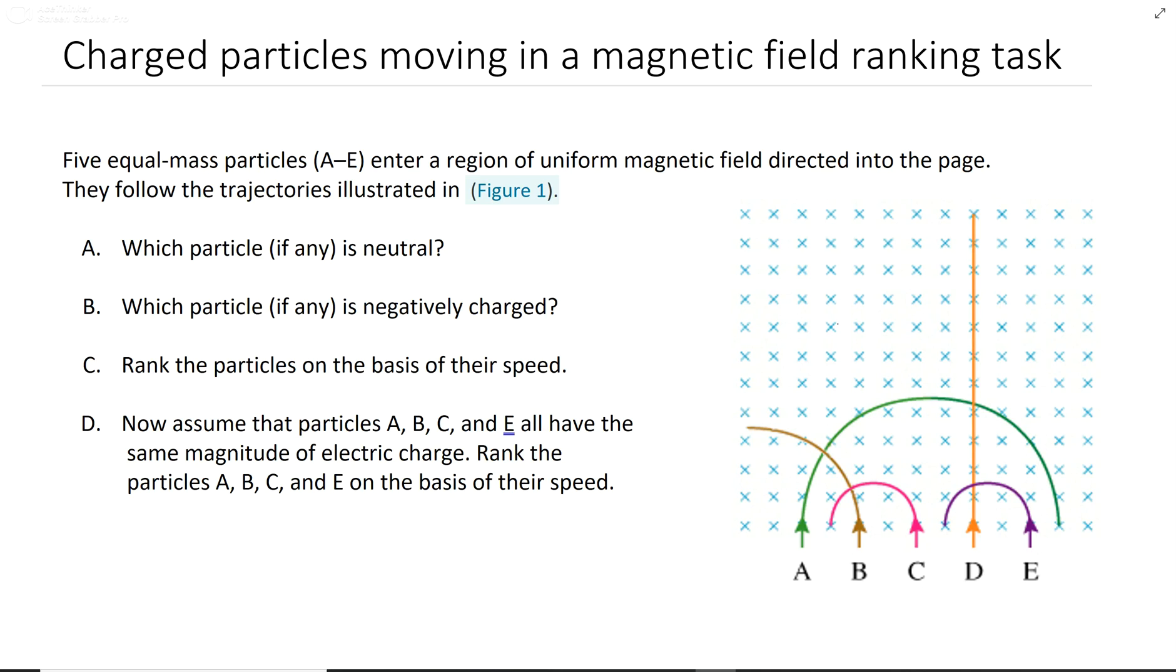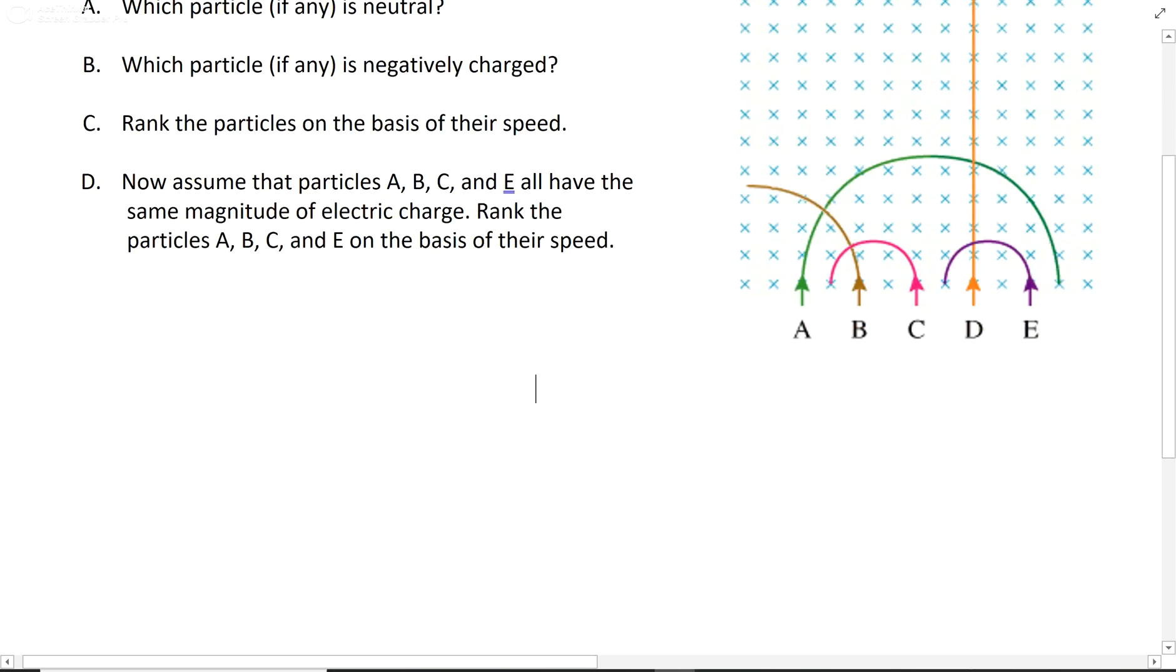So the first thing we're going to do for A is look at our very basic equation of R. Radius equals mass times velocity over the absolute value of the charge times the magnetic field. A asks, who is neutral? Your answer is D and that's because there's no radius. This goes in a straight line which means there's no Q right here. So radius is zero and that's how that works.